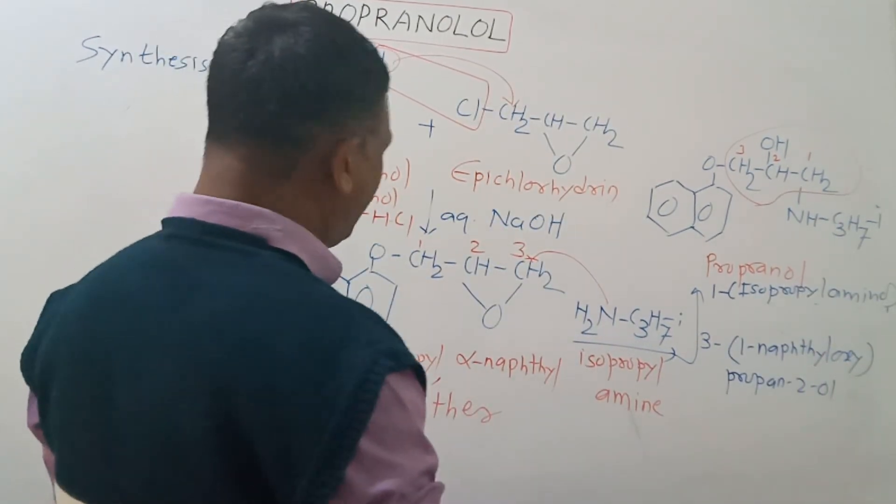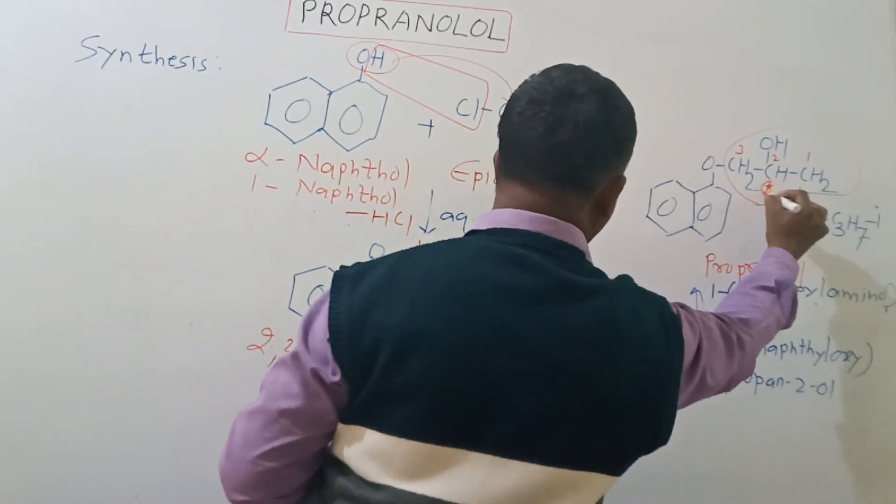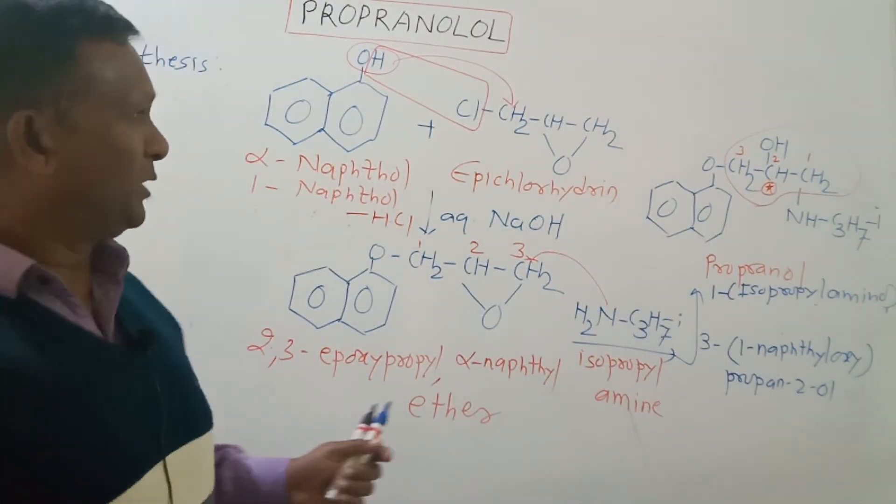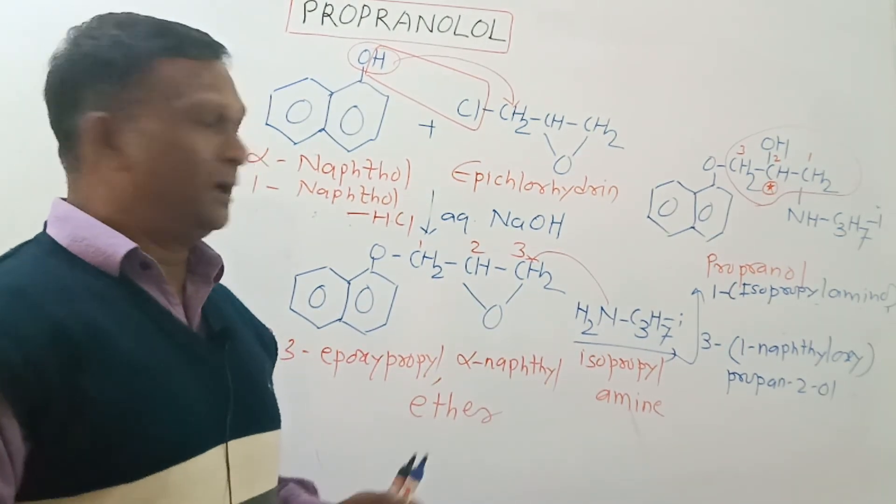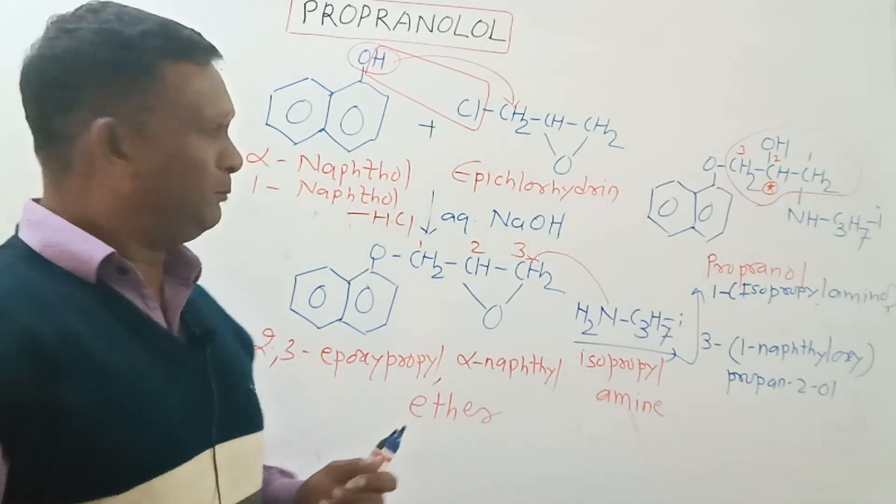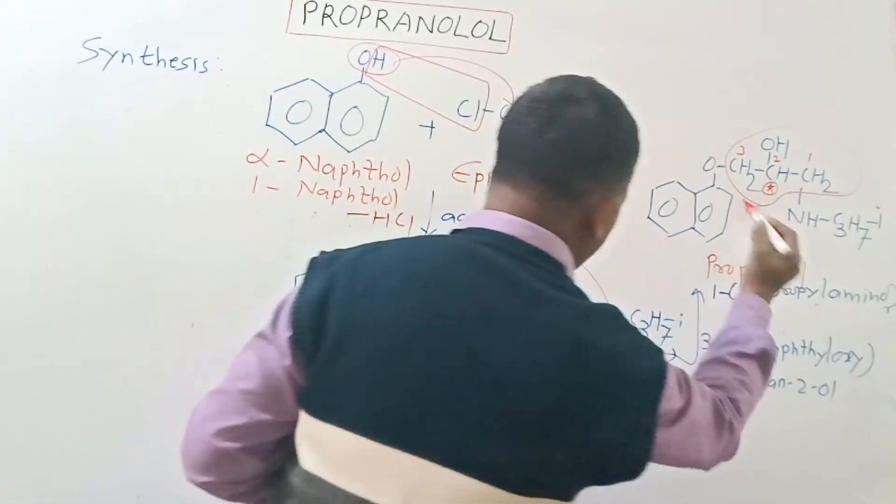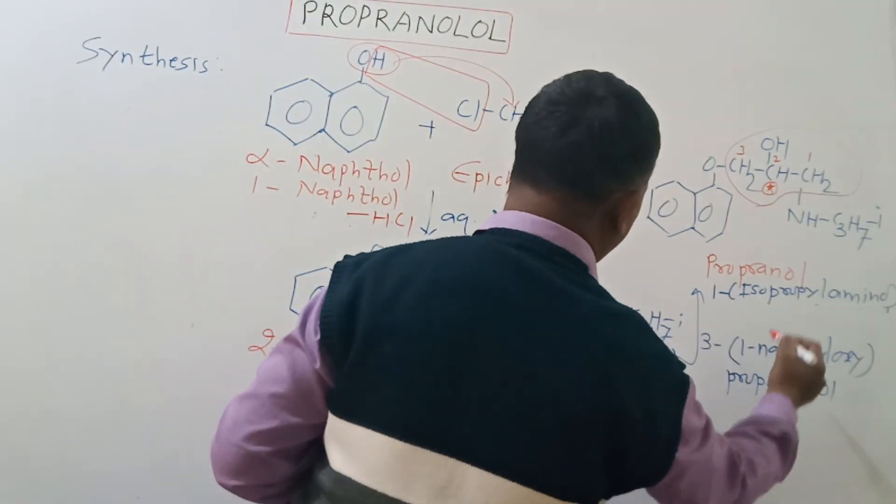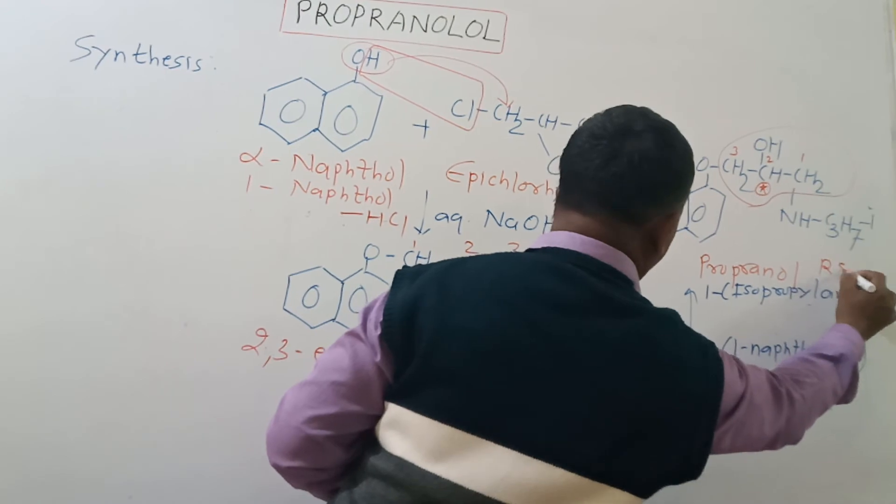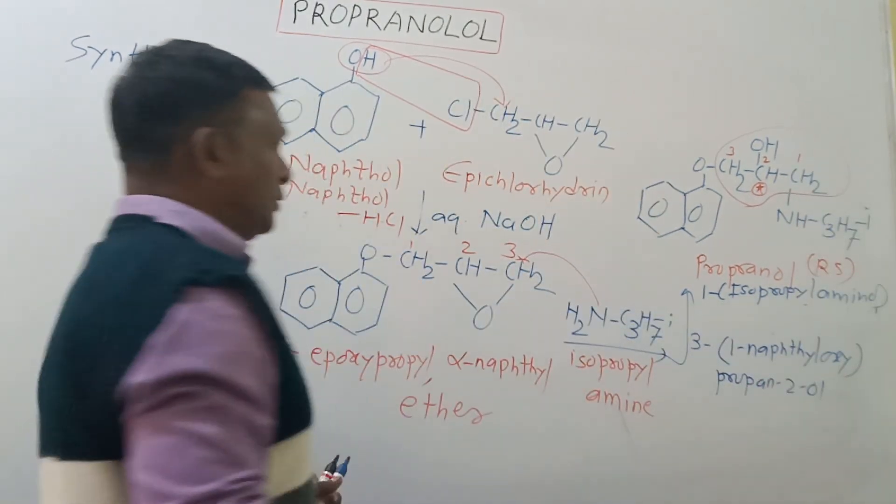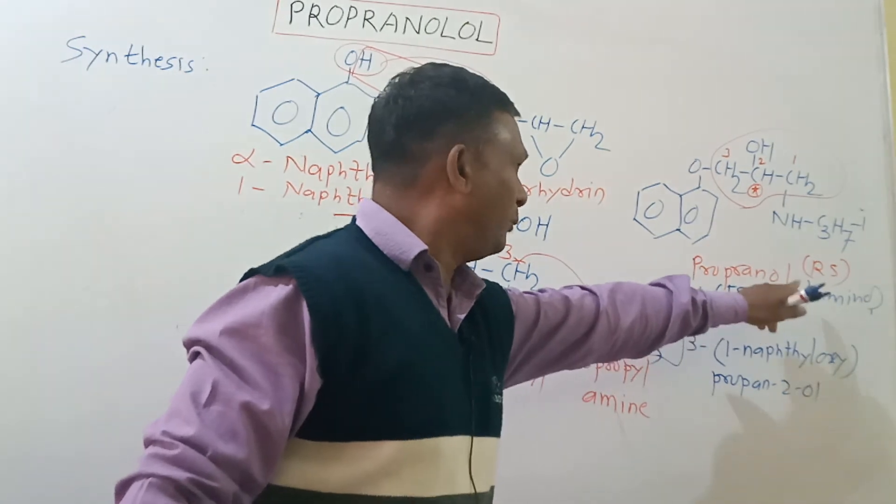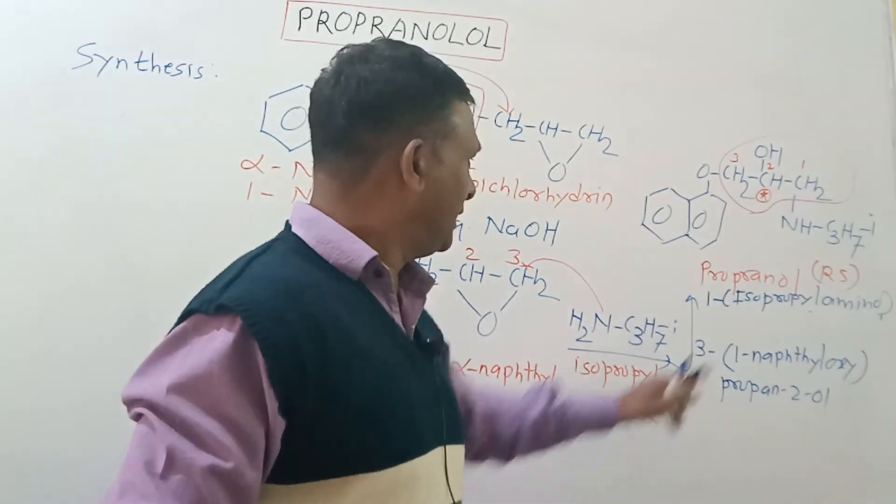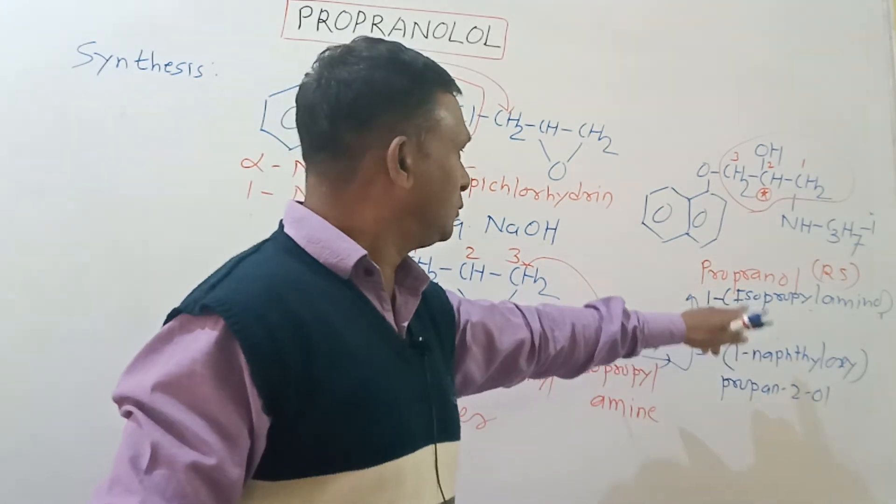We can see here that carbon number two is a chiral carbon, so due to this propranolol exists in the isomeric form, and the propranolol which is employed is a racemic mixture. So that's why we will insert this configuration of both the R and S isomers into the IUPAC name of propranolol.